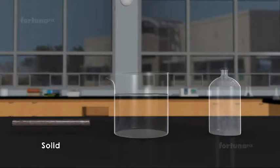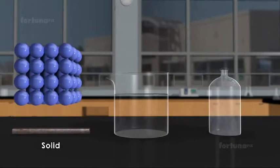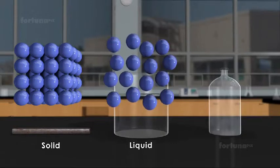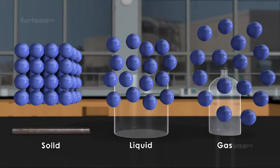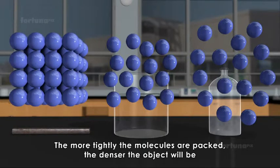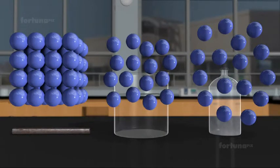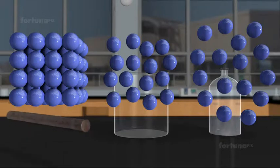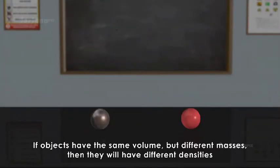Solids such as an iron rod have molecules that are more tightly packed than liquids such as water, while the molecules in a gas are spread much further apart. We can describe density as how tightly the molecules are packed in a particular substance. The more tightly the molecules are packed, the denser the object will be. In the examples we compared, the iron rod is the densest of the three.